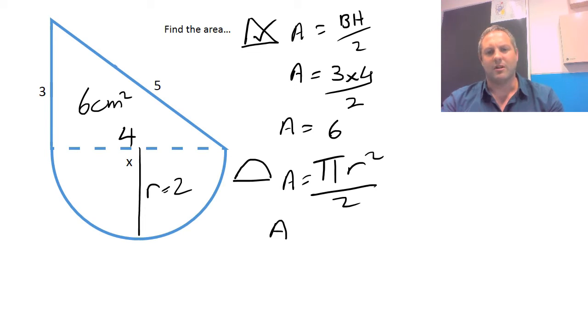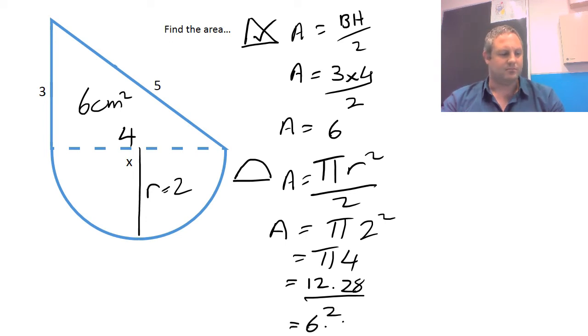Now we're going to rewrite it with what we know. Pi times 2 squared, which is the same as saying pi times 4. Now when you put that in the calculator, you're going to have 12.28. We need to divide that by 2. Gives you 6.28.